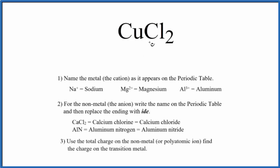To write the name for CuCl2, we have to recognize we have a metal, the copper, and non-metal, the chlorine. So metal and a non-metal, this is an ionic compound.